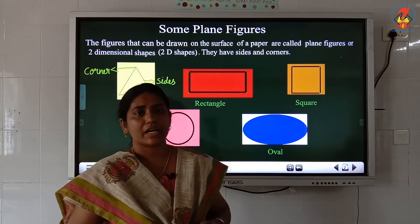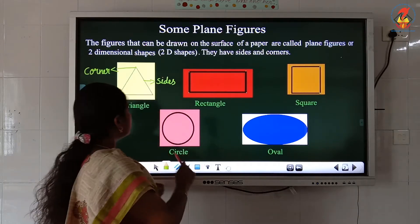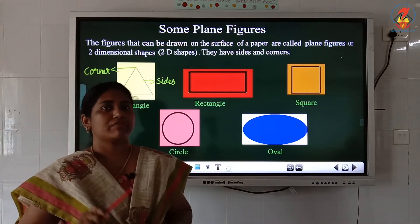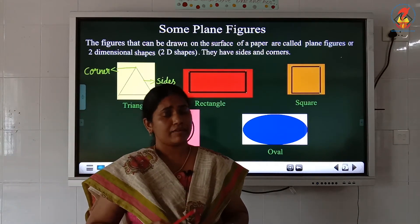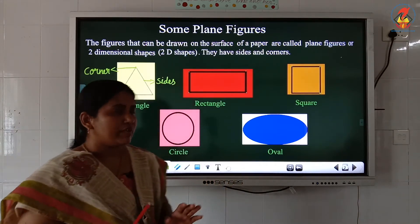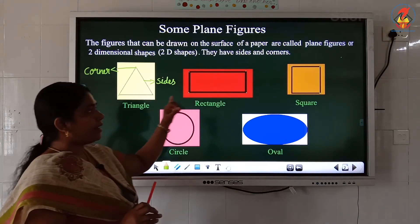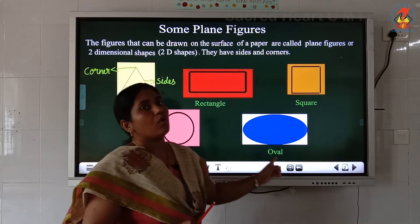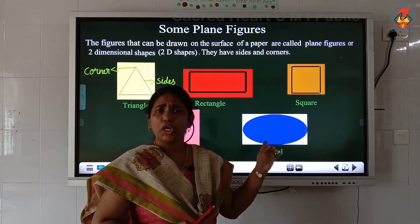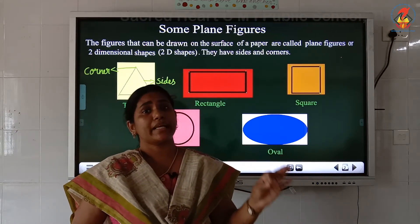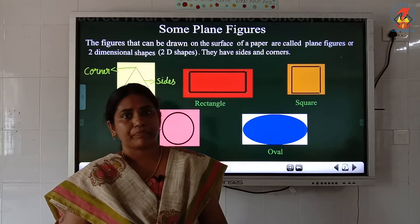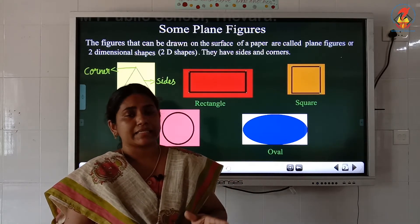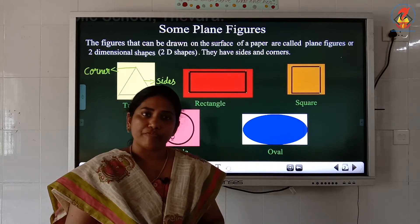So these are the five 2D or plane shapes we study in first standard: triangle, rectangle, square, circle, and oval. You have to write and study the spellings properly. Write the shape names in your rough book first, then do your worksheet.